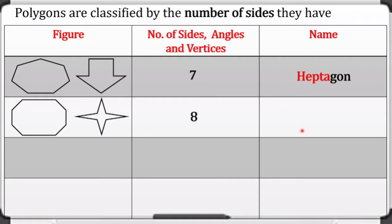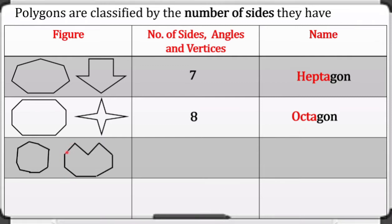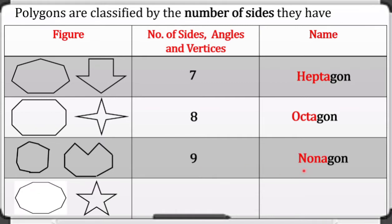This one has eight sides, eight angles, and eight vertices, and we call this one an octagon — 'octa' means eight. Next, this one has nine sides, nine angles, and nine vertices, and we call this one a nonagon.